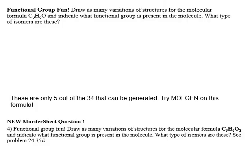Now let's have some functional group fun. We can explore how many different structures can be drawn for a given molecular formula. For C3H6O, you might think there are only five or six. Using a tool called Molgen, it turns out there are actually 34 different structures — far more than you'd expect from just three carbons.